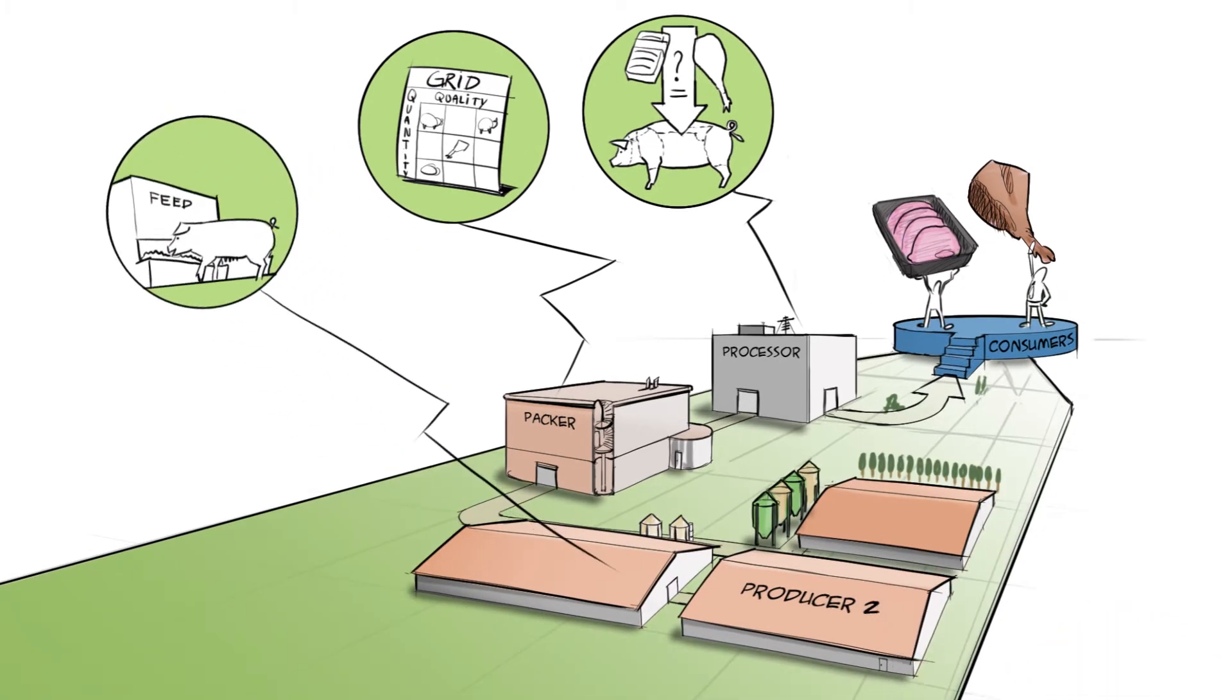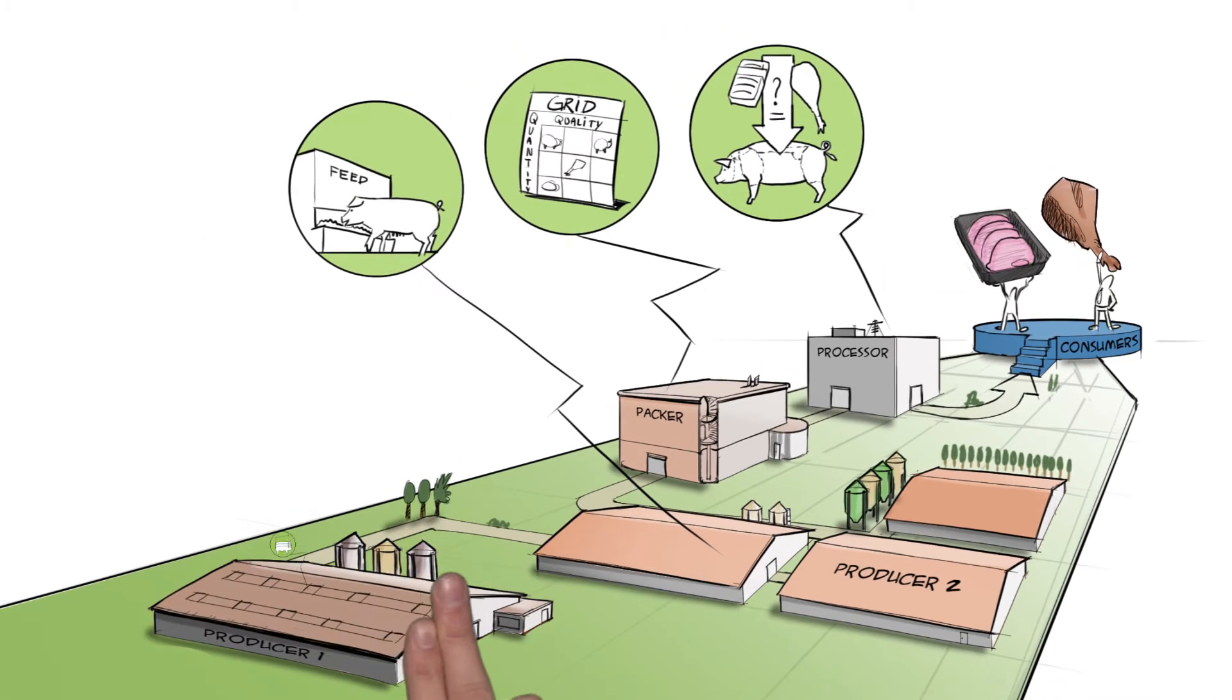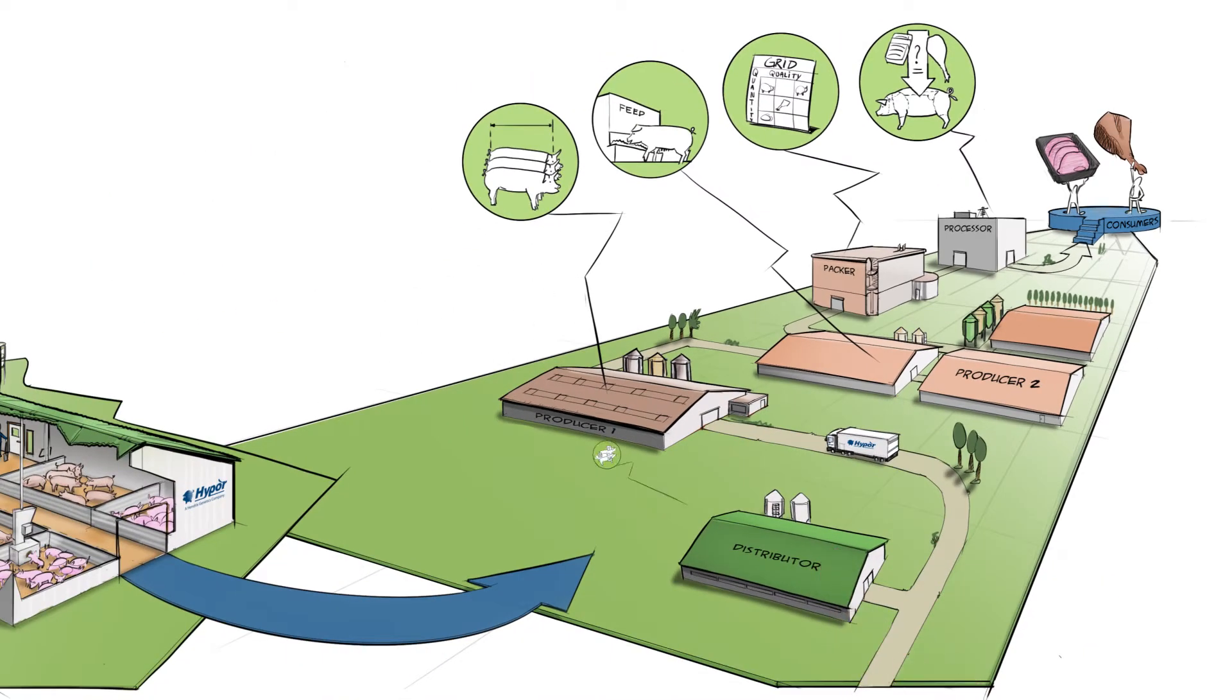Pig producers focus on feed-efficient finishers to ensure a consistent supply based on selection of the best crossings. Distributors produce and select the best sows and boars and organize the gene flow.